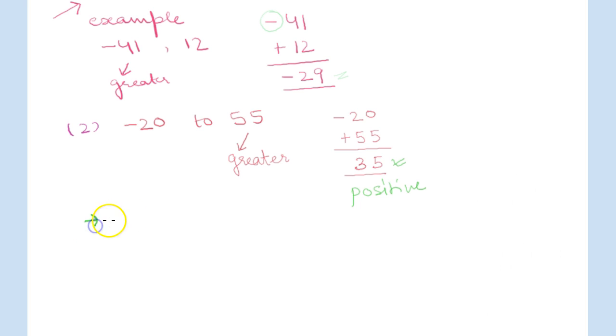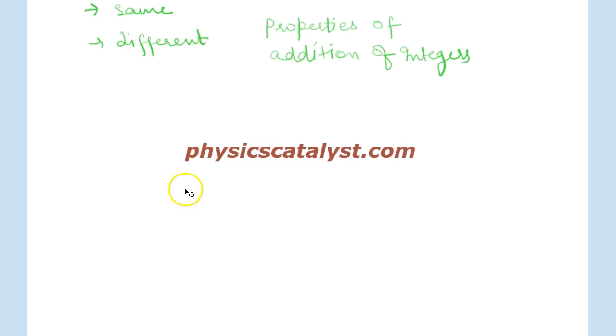Now you know the rules to add two integers with the same sign and two integers with different signs where one integer is positive and one integer is negative. So students, this is it for now and our next tutorial will be on properties of addition of integers. For more notes and study material please visit our website physicscatalyst.com.